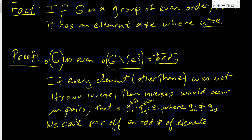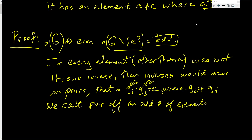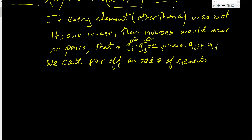We can try. We can take the first two and the second two, pair them up, the third two. But eventually, you're going to have one element left over. It must be its own inverse.